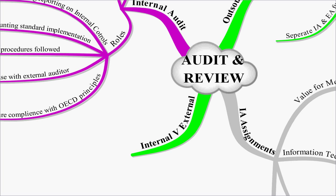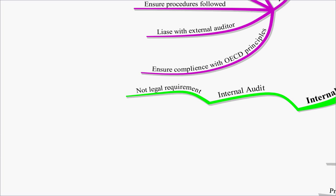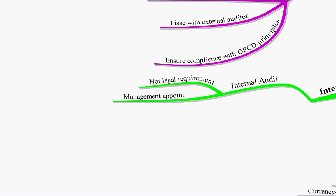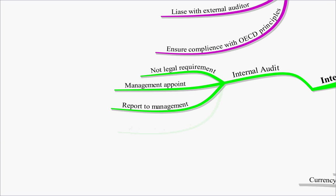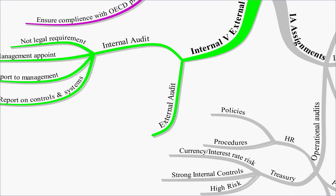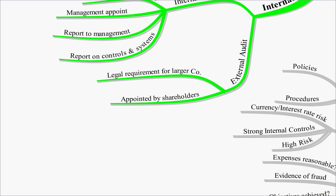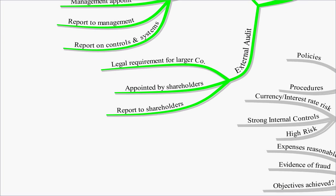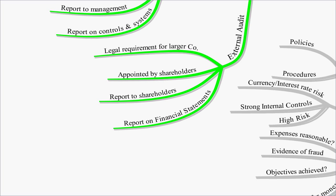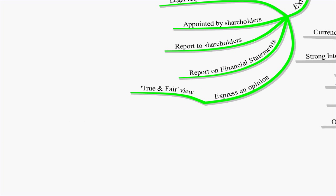So those are different internal audit assignments. But what is the difference between internal and external audit. Well internal audit is not a legal requirement. It's not required under statute. The management will appoint your internal auditors, and they'll report to management. And what they do is they report on controls and systems. This is as opposed to external audit. External audit is a legal requirement for larger companies. The external auditor is appointed by shareholders. They make the report to the shareholders. And that report is on the financial statements. And they make an express opinion on the financial statements. And that opinion will be whether the financial statements present a true and fair view.